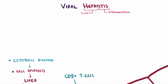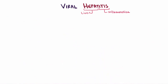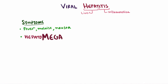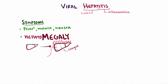As someone's hepatitis progresses, we'll see a couple of classic symptoms related to the immune system mounting an attack, like fever, malaise, and nausea. Additionally, patients might have hepatomegaly, where their liver is abnormally large from inflammation, which might also cause some pain.